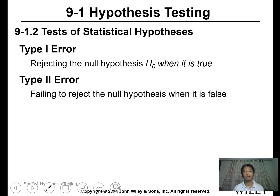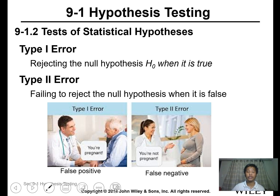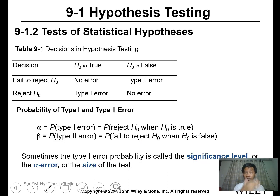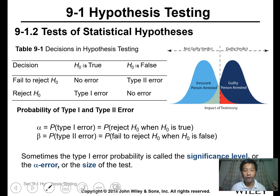In hypothesis testing, we usually incur errors. There are two types: Type 1 and Type 2 error. Type 1 is the false positive — rejecting the null hypothesis when it is in fact true. Type 2 is the false negative error.